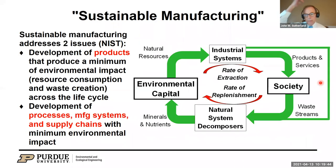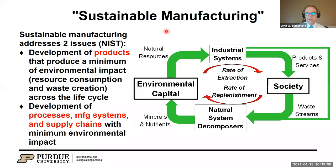Sometimes we talk about sustainable manufacturing — which I dislike as a phrase because we're not trying to sustain manufacturing; we're trying to do the things in manufacturing that help us be sustainable. According to NIST, the National Institute of Standards and Technology, we should be thinking about sustainability in terms of both products and manufacturing — designing products that have a minimum environmental impact, and also thinking very carefully about whether the products themselves are a good idea in the first place.